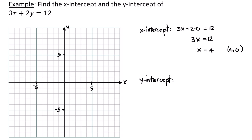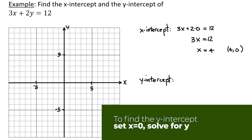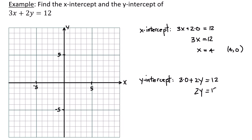To find the y-intercept, we let x equal 0: 3(0) + 2y = 12, so 2y = 12, y = 6. The y-intercept is the point (0, 6). If I plot those two points — (4, 0) and (0, 6) — it gives me the graph of the line.